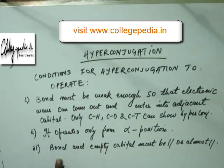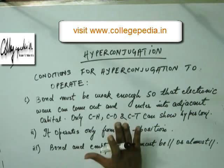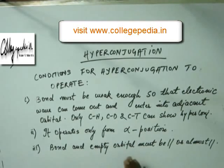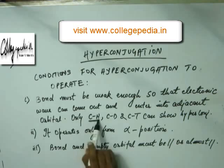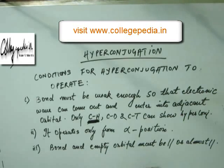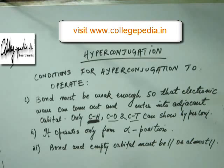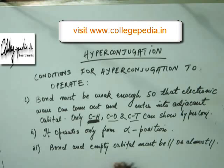These are the 3 important points and conditions that have to be fulfilled for hyperconjugation to operate. Condition number 1: the bond has to be weak. In weak bonds, electronic density is loose so that electrons can come out and enter into the adjacent P or pi orbital. This condition of weakness is fulfilled only by C-H bond in organic chemistry — we will not use this concept for any other bond. The second condition is it will operate only from alpha position, not from beta, gamma, or delta, because electronic transition is not possible from great distances. The third condition is the bond has to be parallel or almost parallel to the orbital — if they are perpendicular, the extent of hyperconjugation would be zero.